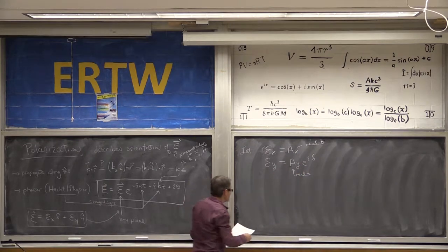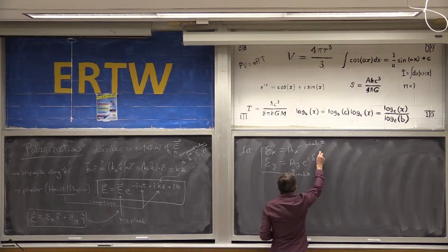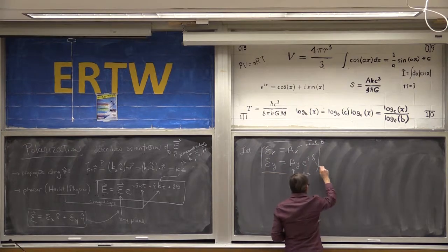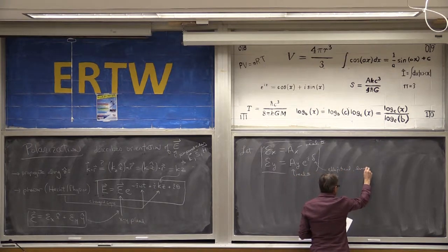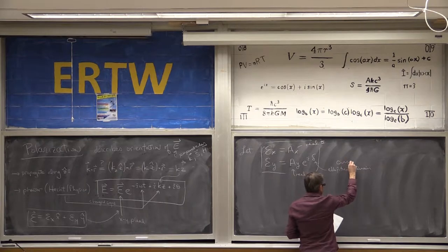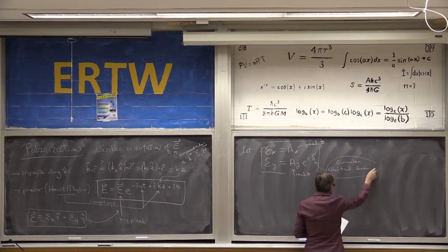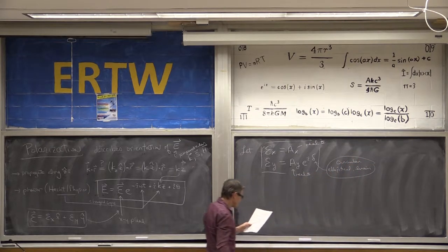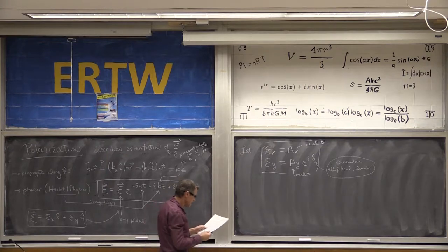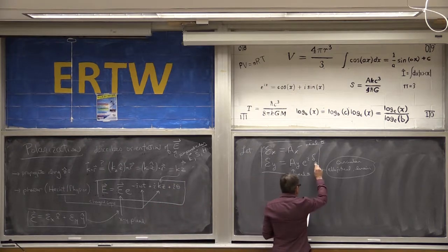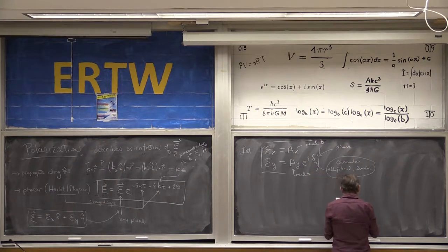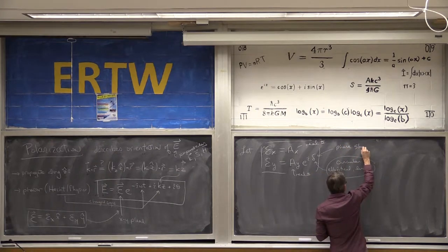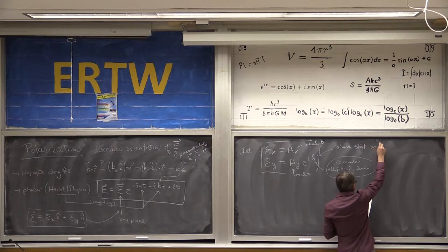This e^(iδ) is what's going to manipulate the time delay on when EY is coming up relative to EX, with Z being the propagation direction. So we allow E to have an X amplitude AX, EY to have an amplitude AY, and there's a phase difference between these two components that will help us define the polarization.